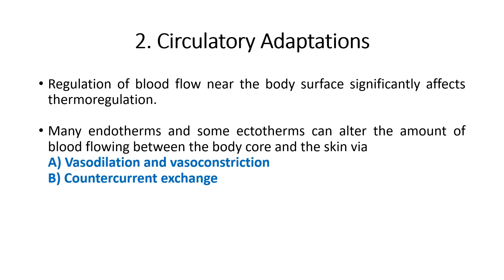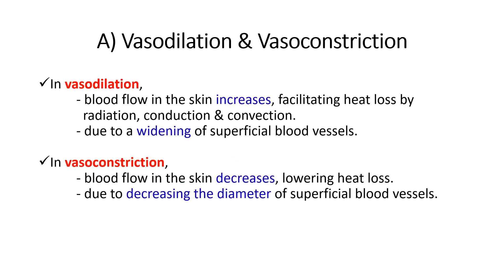Number two — circulatory adaptation: regulation of blood flow near the body surface significantly affects thermoregulation. Many endotherms and some ectotherms can alter blood flow between the body core and the skin via vasodilation and vasoconstriction. In vasodilation, blood flow in the skin increases, facilitating heat loss by radiation, conduction, and convection due to widening of superficial blood vessels. In vasoconstriction, blood flow in the skin decreases, lowering heat loss due to narrowing of superficial blood vessels.